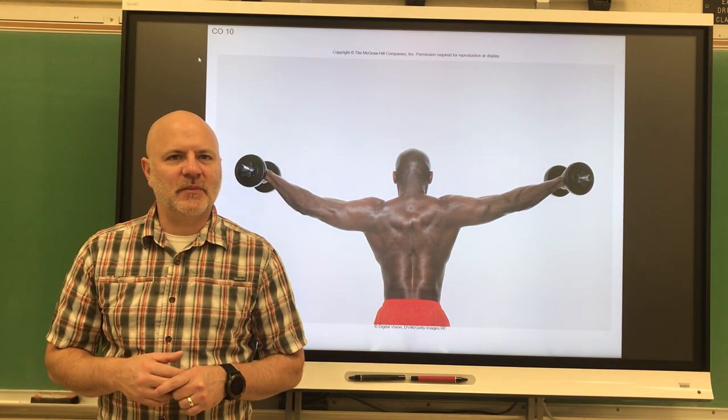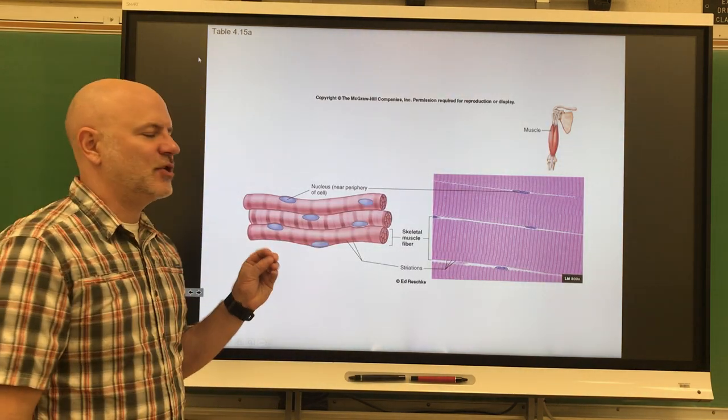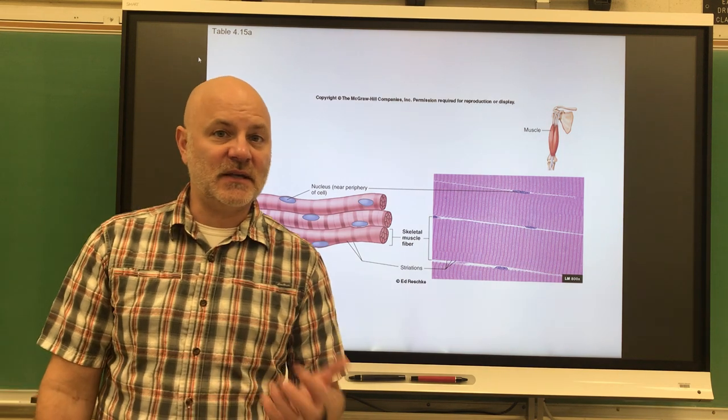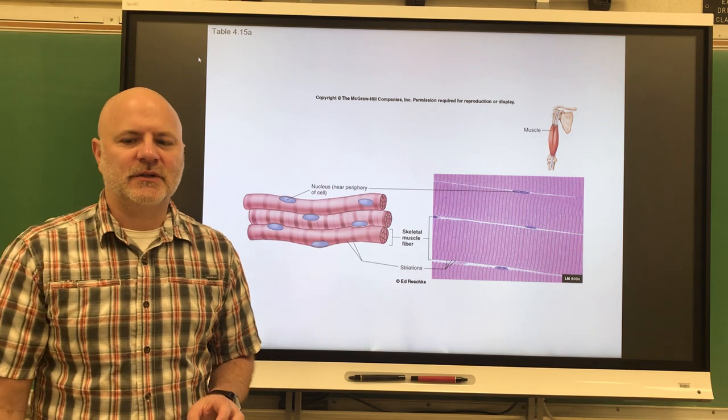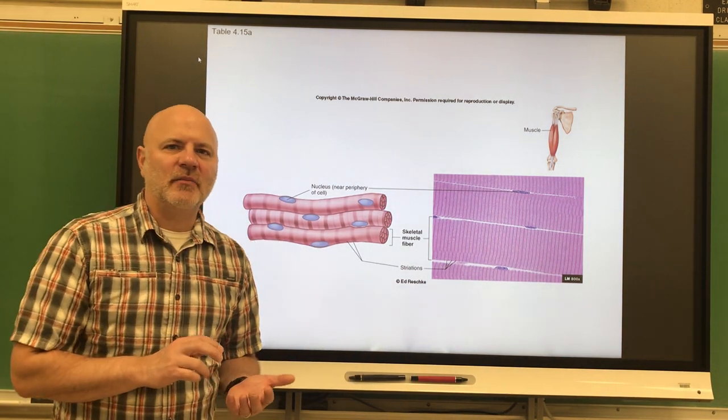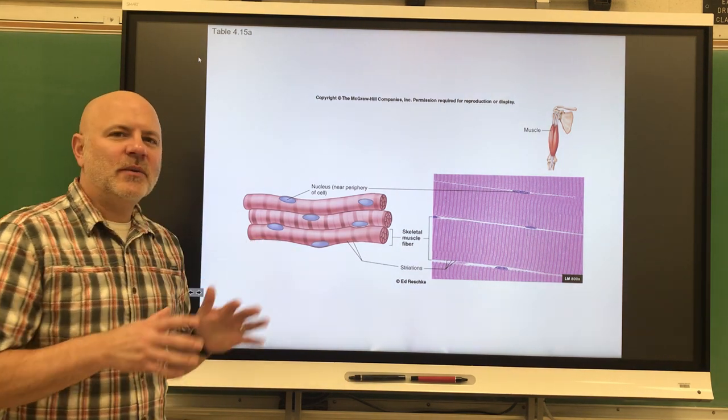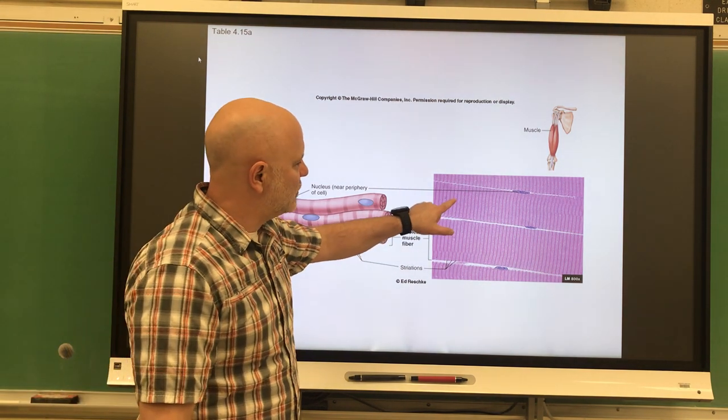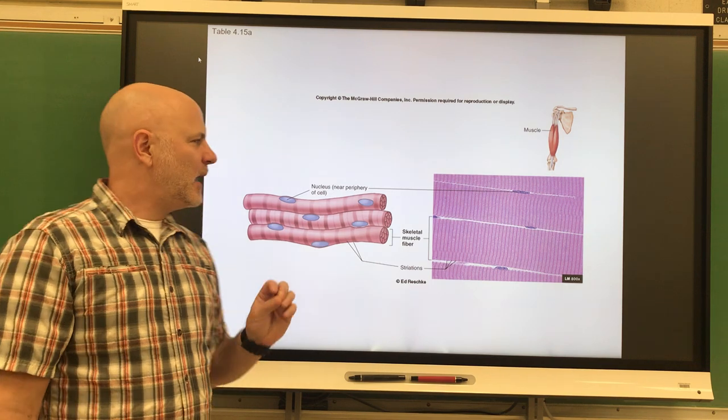When we look at types of muscle tissue, this is actually coming out of chapter 4. First is skeletal muscle tissue. Skeletal muscle tissue, shown here, is a type of voluntary muscle tissue in muscles attached to bone. This is what we typically think of as muscle. It has striations.